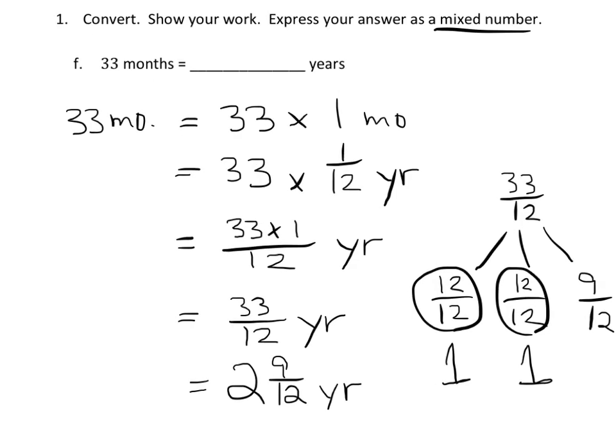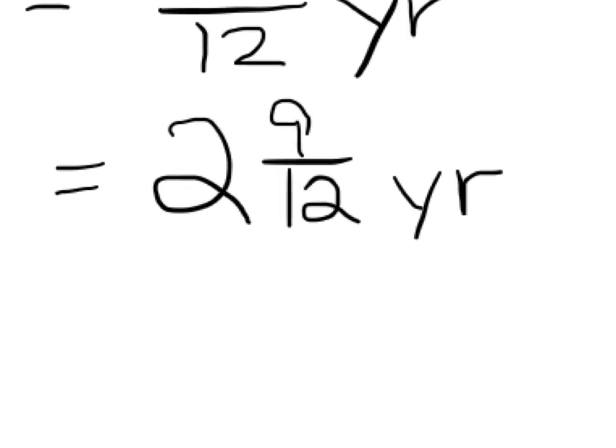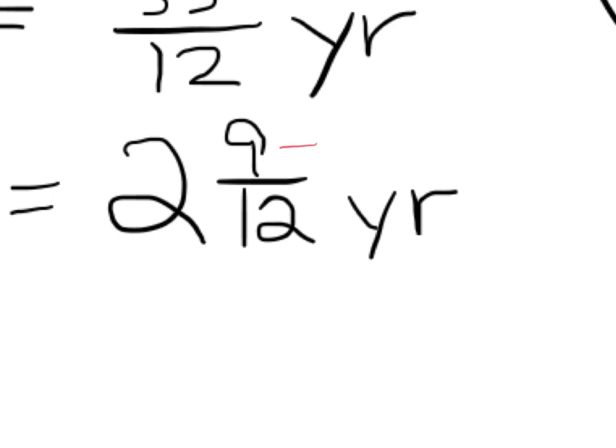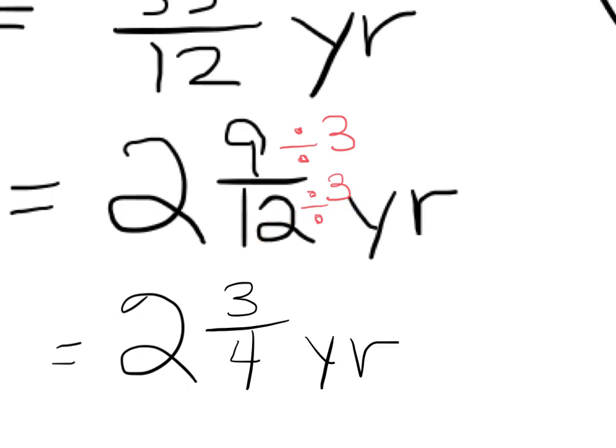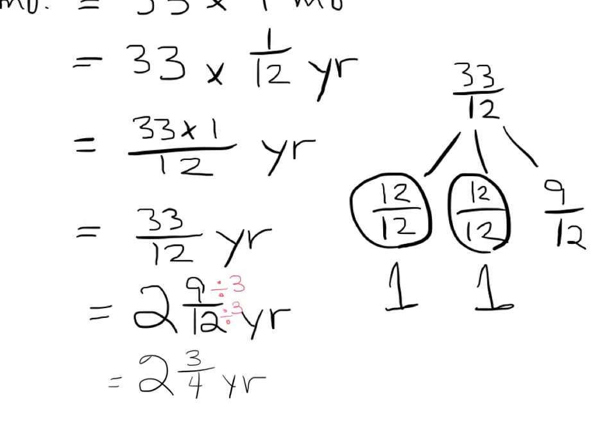But it doesn't say we have to, but let's reduce or simplify. So that 9 twelfths, and I'm going to zoom in here, 9 twelfths, both the 9 and the 12 are divisible by 3. So we get 2 as our whole number. And then 9 divided by 3 is 3 over 12 divided by 3 is 4. So our answer is 2 and three-quarters years, or 2 and three-fourths years.